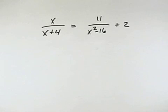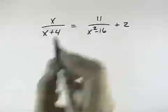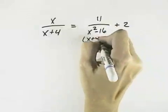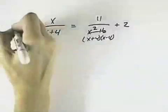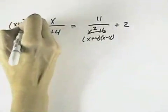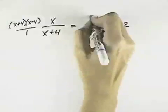We want to solve this rational equation. To do that, I'm going to first multiply by the common denominator. To see the common denominator, I'll factor this difference of squares so I can see the two factors. So that means I'm going to multiply both sides of my equation by x plus 4 times x minus 4 over 1.